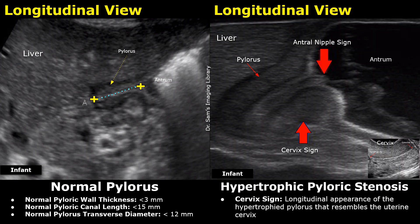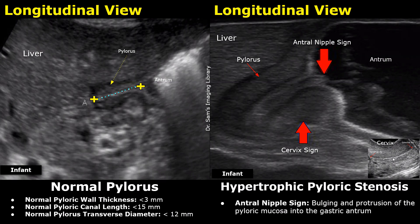This appearance of the enlarged pyloric canal is called the cervix sign, because it resembles the uterine cervix on ultrasound — you can see the similarity between the cervix and the hypertrophied pylorus. Another sign seen in the same image is the antral nipple sign, which refers to the protrusion of the pyloric mucosa into the gastric antrum. This pyloric mucosal protrusion is another sign seen in pyloric stenosis.